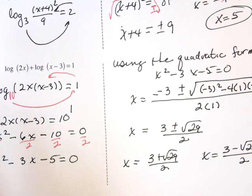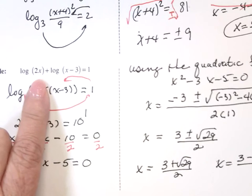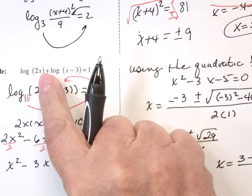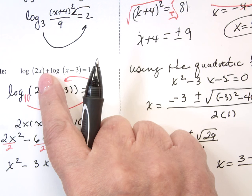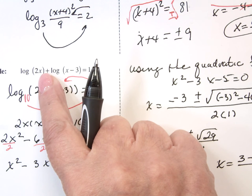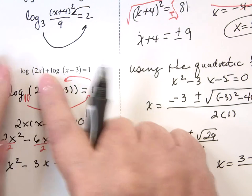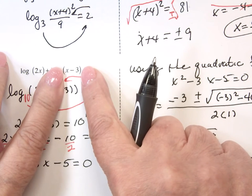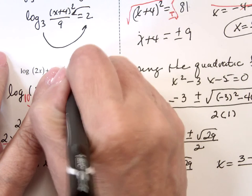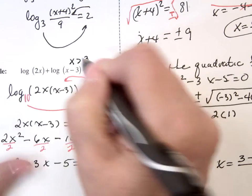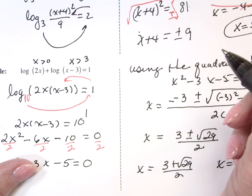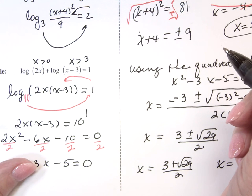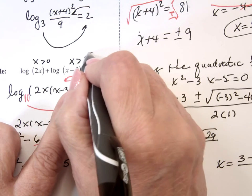What makes life very nice for me is that this is a 2 times x. So any x value I put in here has to be positive. Here, this is an x minus 3. This says x must be greater than 3. This one says x must be greater than 0. In order to make everybody happy, x must be greater than 3.